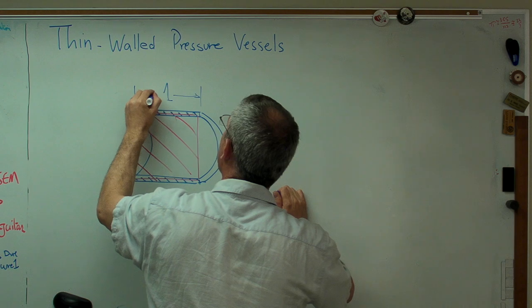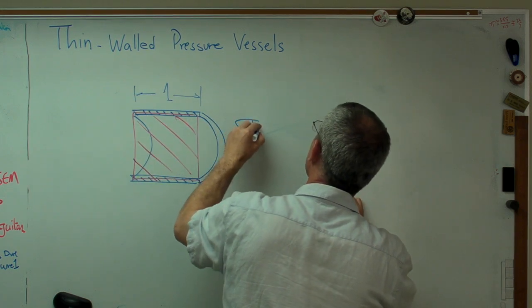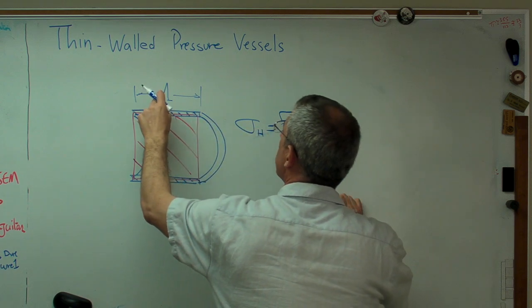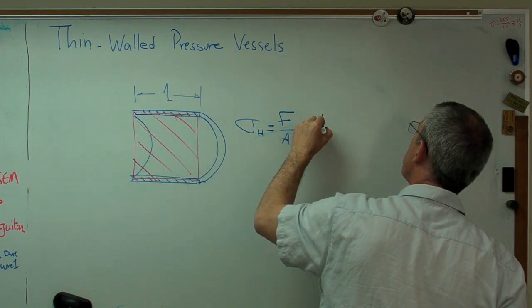Now, we can pick any length we want, and the stresses are not dependent on the length of the pressure vessel. So, we'll call that one. So, hoop stress is F over A. Okay, that's one times the mean diameter times the pressure.